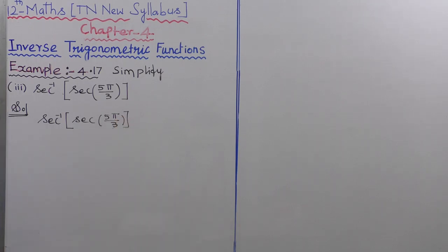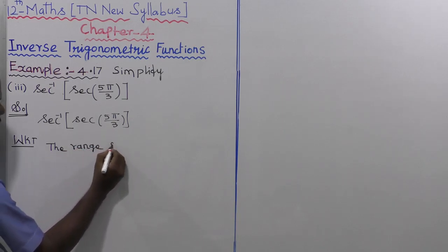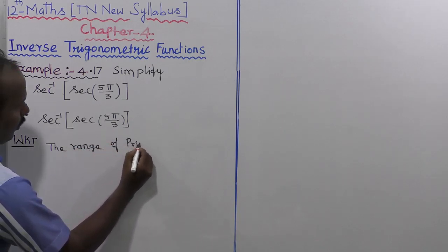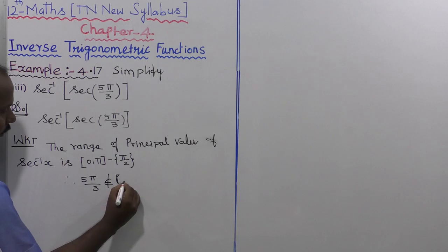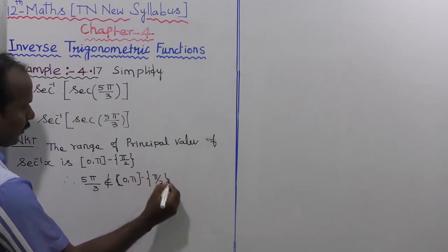We know that the range of the principal value of secant inverse of x is the closed interval [0, π], except π/2. Now, 5π/3 is not in the closed interval [0, π] except π/2. So we need to rewrite this value.